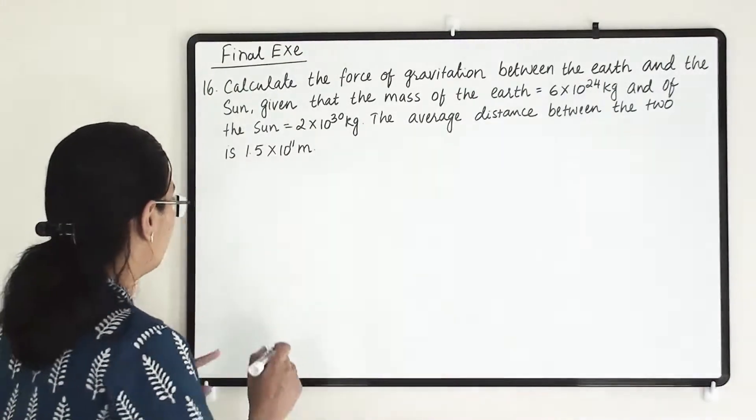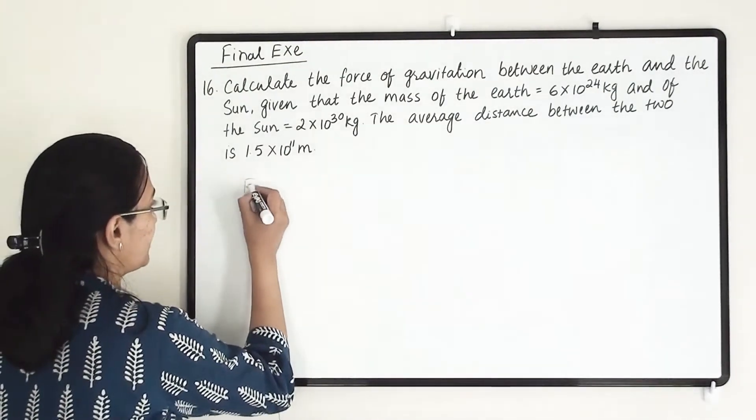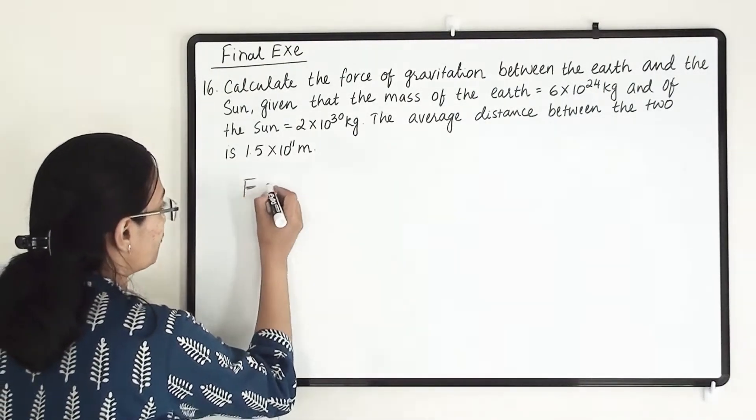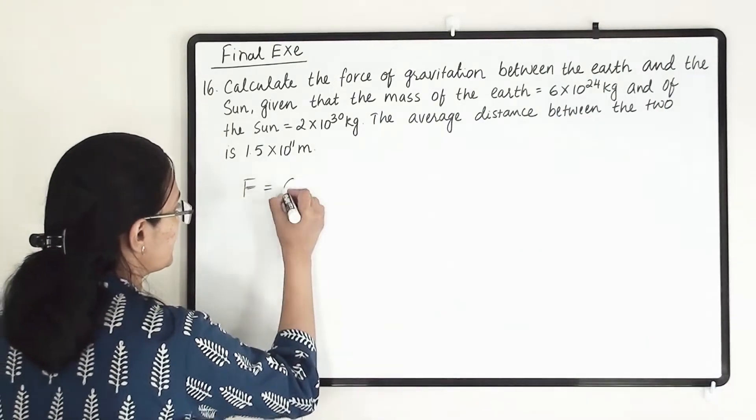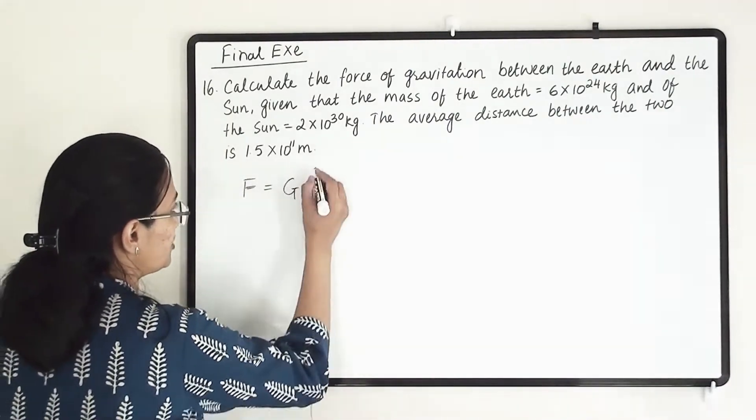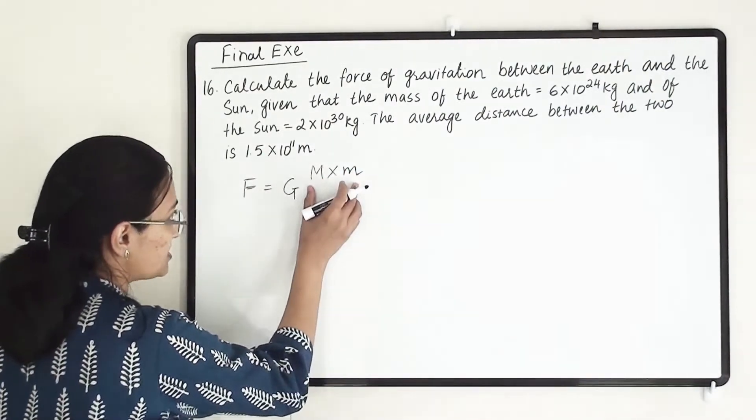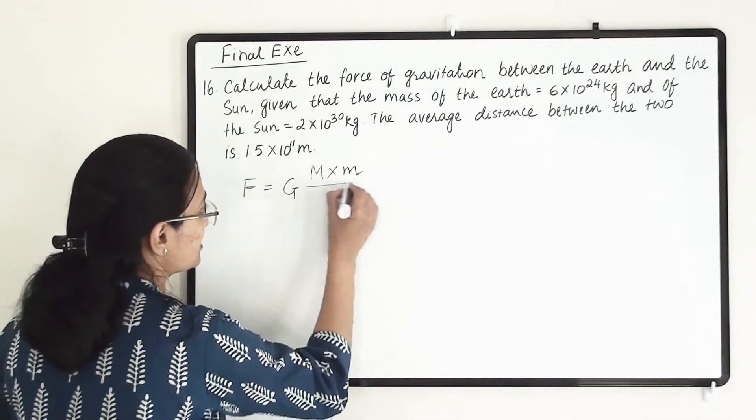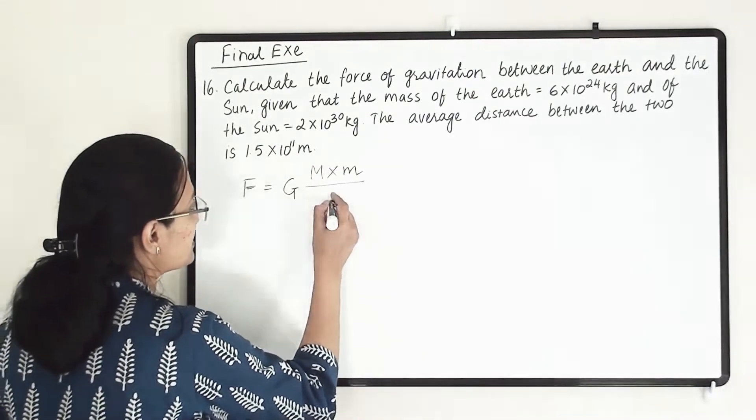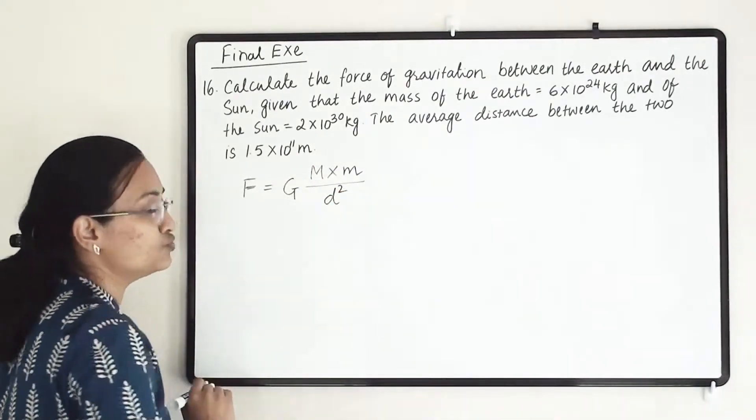We know that the formula to find the gravitational force between two objects is F equals capital G times M times m divided by d squared, where these are the masses of both objects divided by the distance between the two objects.